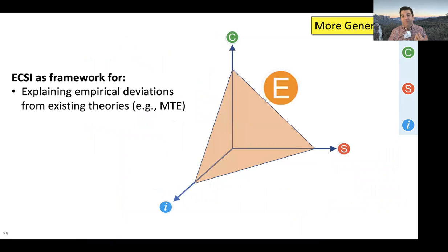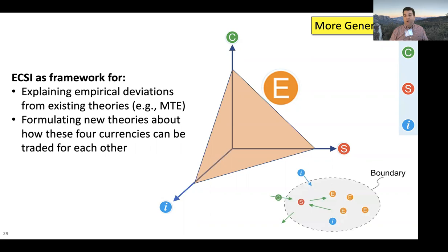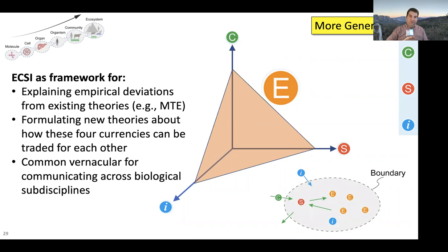That's an example of how we can reconceptualize existing theories using these four resources. We also look at other theories more generally, like the metabolic theory of ecology — theories that may have elegant backgrounds but still show a lot of empirical deviations from data. We can ask: do those theories account for all four of these necessary resources? If they don't, then by adding in components that account for the missing ones, maybe we start explaining the deviations. Alternatively, maybe we can come up with totally new general theories based upon these four boxes. If we account for all four, we may find trade-offs among them. And if we all start talking in terms of these four resources, we can integrate across sub-disciplines using the same vernacular, so that great discoveries in one sub-discipline drift down to others below and bubble up to others above.